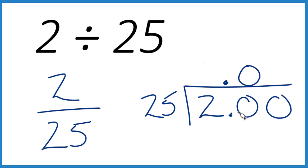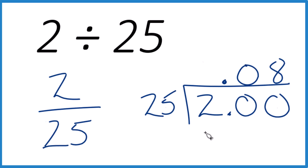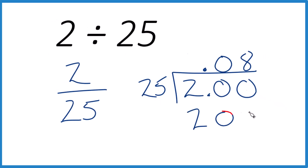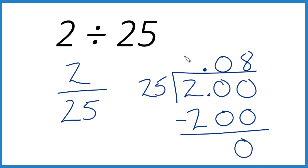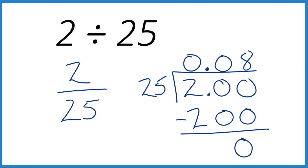So 2.00 — it's still 2. But now 25 times 4 is 100, and 25 times 8 should be 200. Let's check that on our calculator. Yep, 200. So 200, we're going to subtract and end up with 0. And 2 divided by 25 is 0.08. Usually put a 0 in front here to show our place value and make that clear.